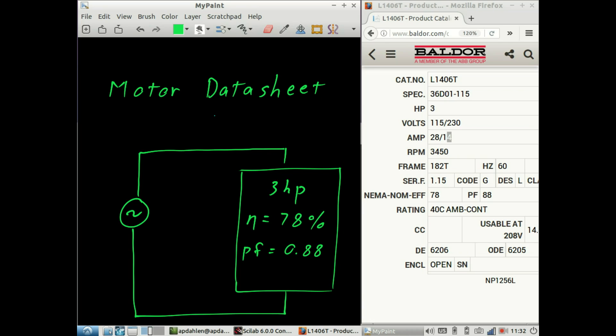Note that these numbers, the efficiency η here and the power factor, are both listed while the motor is operating at a nominal 3 horsepower.